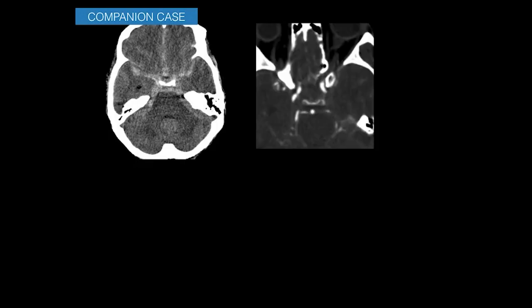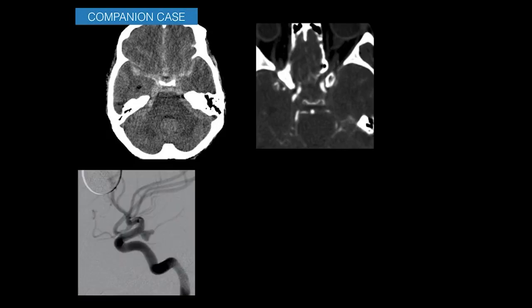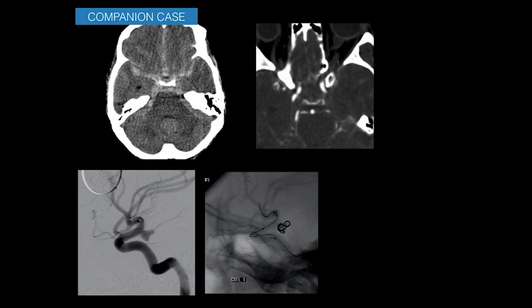Sometimes the bleed is more diffuse and it is difficult to identify the underlying aneurysm. However, subtle signs can help — for instance, if blood within the right parasellar cistern is slightly more than the left, a CT angiogram may show a right PCOM aneurysm involving the communicating segment of the ICA, which can be confirmed on DSA and treated with balloon-assisted coiling.